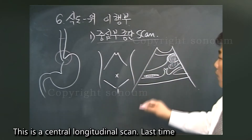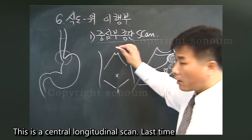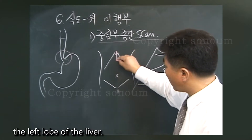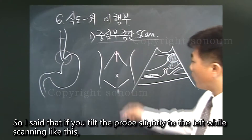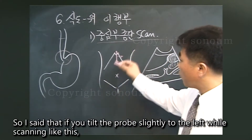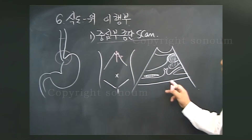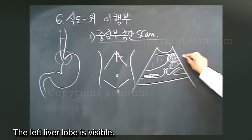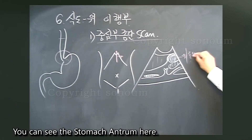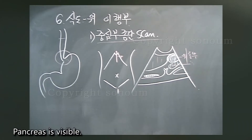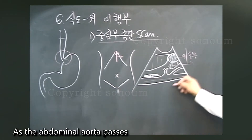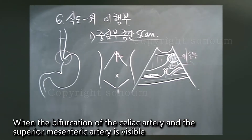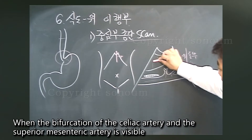This is a central longitudinal scan. Last time we studied how to longitudinally scan the left lobe of the liver. If you tilt the probe slightly to the left while scanning like this, you will see a picture like this. The left liver lobe is visible. You can see the stomach antrum here. The pancreas is visible. As the abdominal aorta passes, the bifurcation of the celiac artery and the superior mesenteric artery is visible.